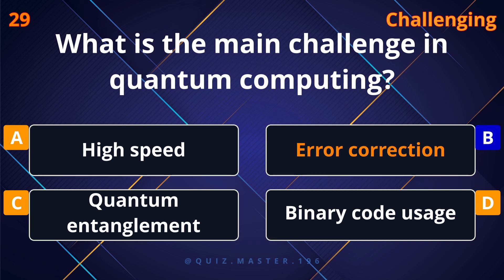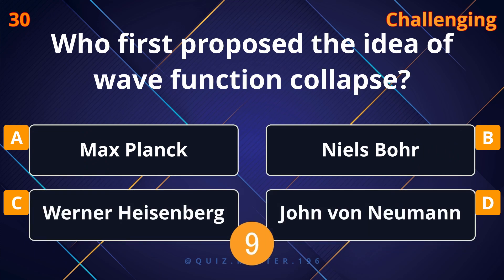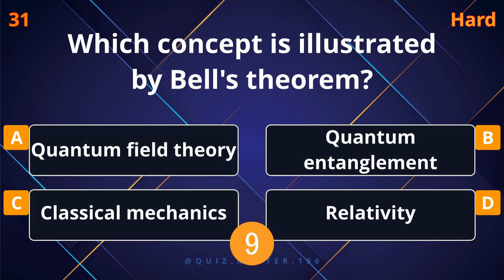What is the main challenge in quantum computing? Error correction. Who first proposed the idea of wave function collapse? Werner Heisenberg.